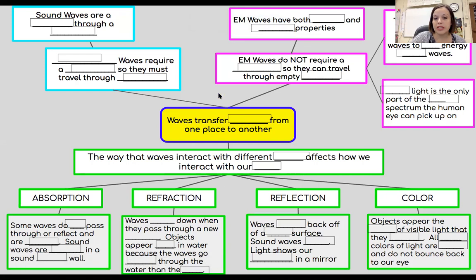We're going to start in the middle in this yellow box. It's a word web or a flow chart, and I would like you to type in the words as you hear me go through them. So waves transfer energy from one place to another, so we need to put energy here because that's what waves are. They're a transfer of different forms of energy from one place to another.